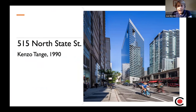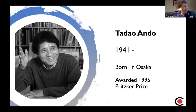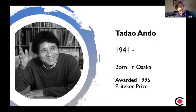Tange also influenced other architects, namely the next architect we're going to talk about, Tadao Ando, who still lives. Ando has admitted he was influenced by three major architects: Tange was one, Frank Lloyd Wright was the second, and Le Corbusier the third. Ando's got an interesting background — he was self-taught and didn't go to architecture school. To support himself, he was a prize fighter at one point. But as a teenager, he saw Frank Lloyd Wright's Imperial Hotel in Tokyo, and that's what made him decide to become an architect. He has a number of buildings and designs here in Chicago that we get to enjoy.